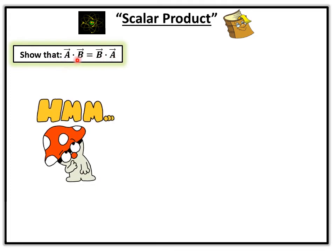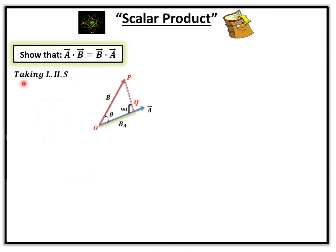Suppose that we have a·b = b·a. We are going to discuss the left hand side. Taking left hand side, which is equal to a·b. Students, this is the representation we are discussing. We have two vectors — vector A and vector B — which form a theta angle. If we draw a perpendicular from the head of vector B, which is represented as PQ, then we have a triangle OPQ formed. OQ is the base, PQ is the perpendicular, and OP is the hypotenuse.